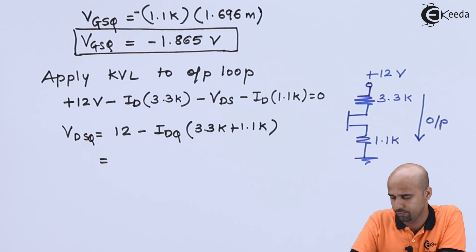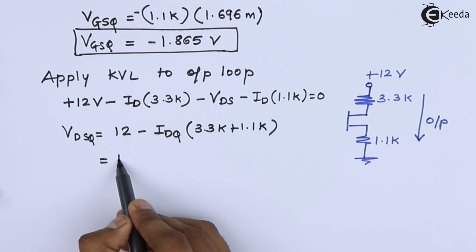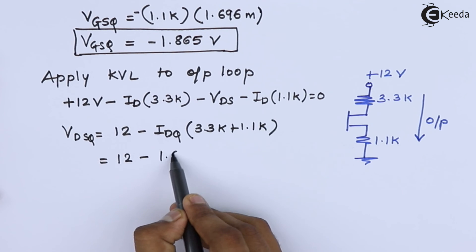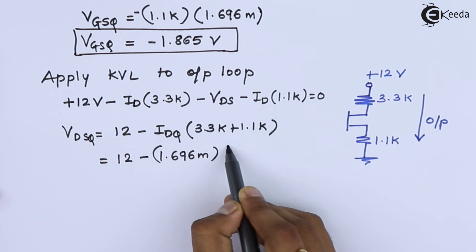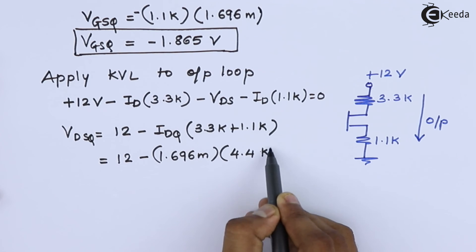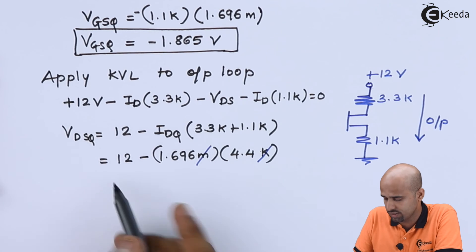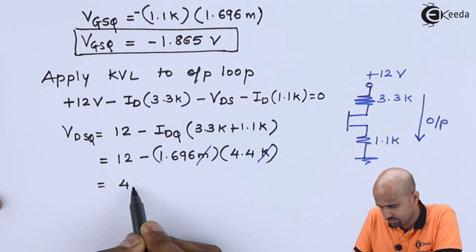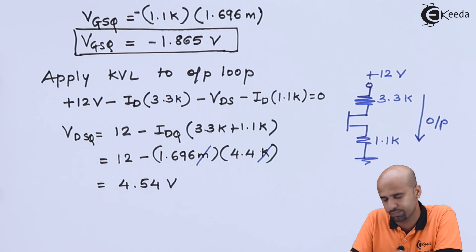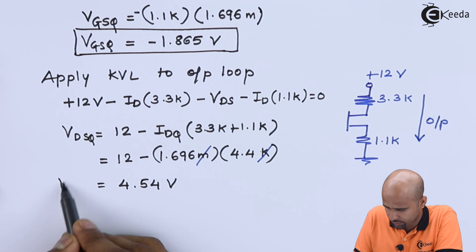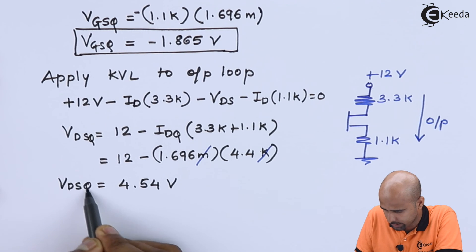We will be getting the value of VDSQ is equal to 12 minus ID multiplied by 3.3k plus 1.1k. Calculate immediately this value VDSQ. Let's check your and my answer. So the answer is 4.54 volts.